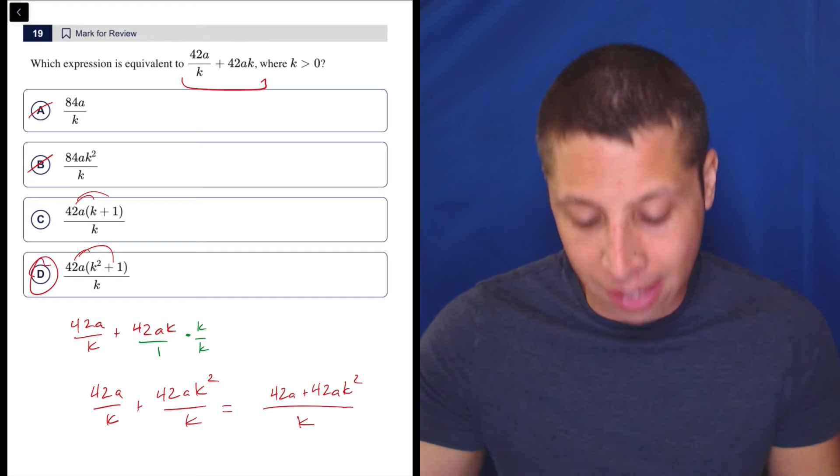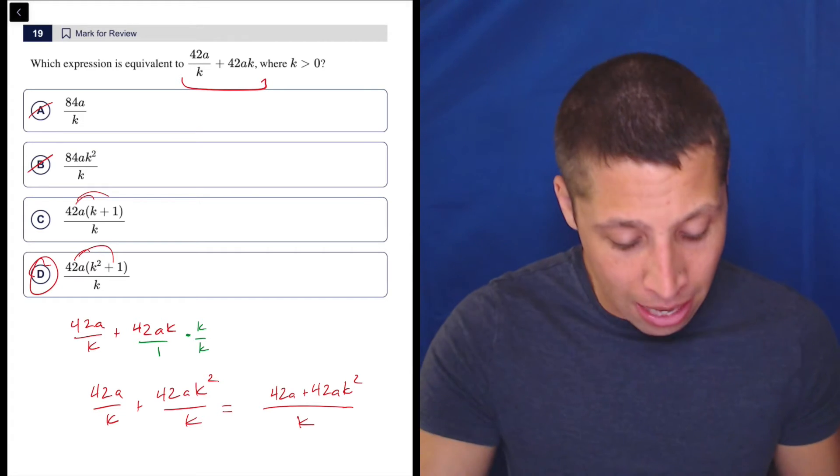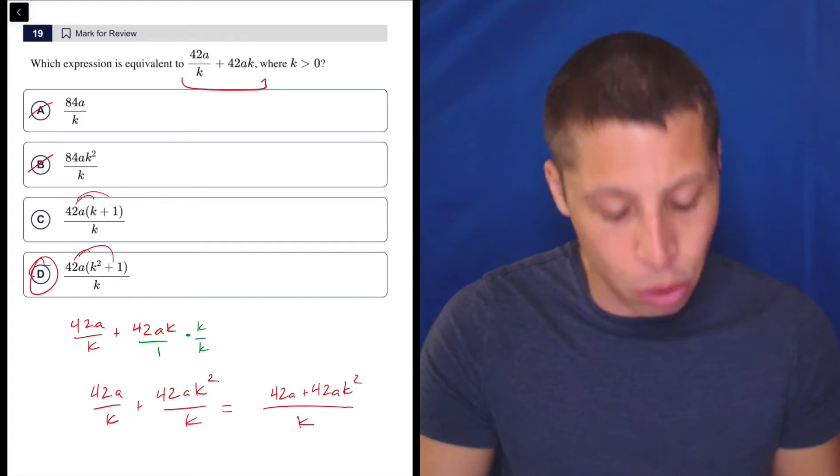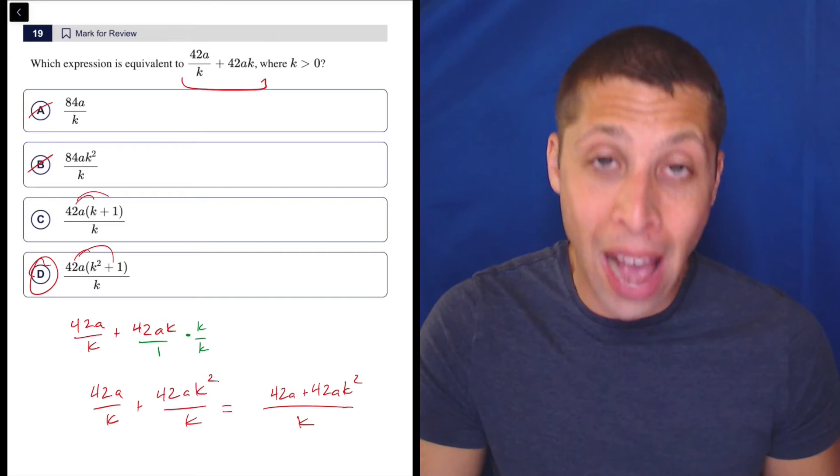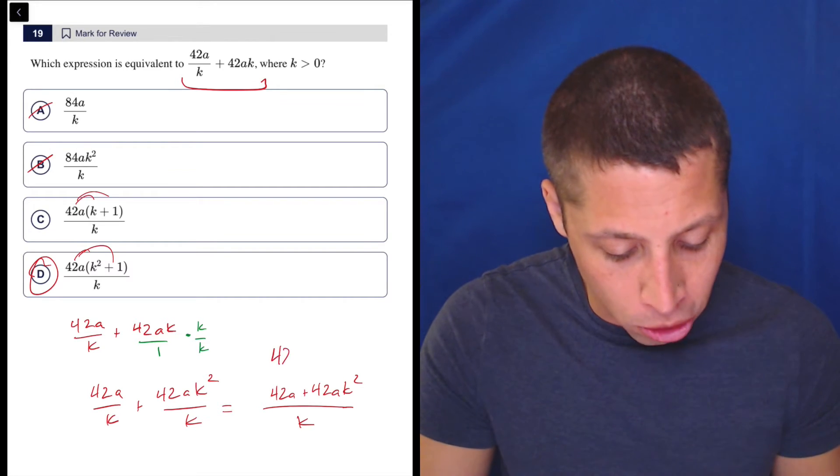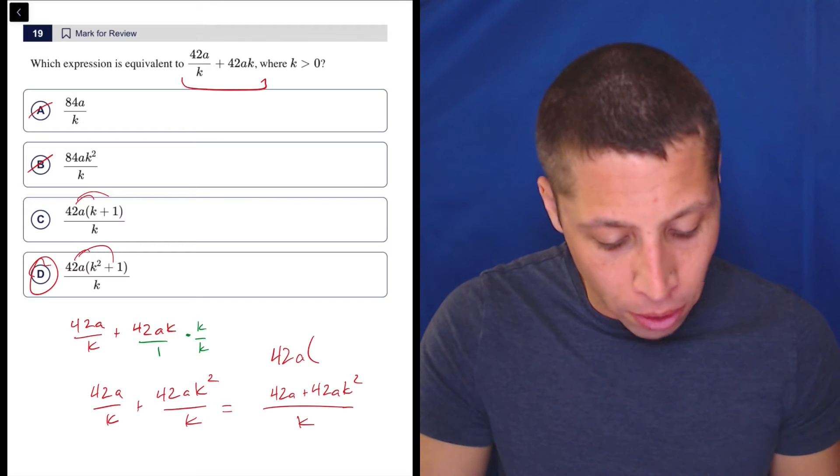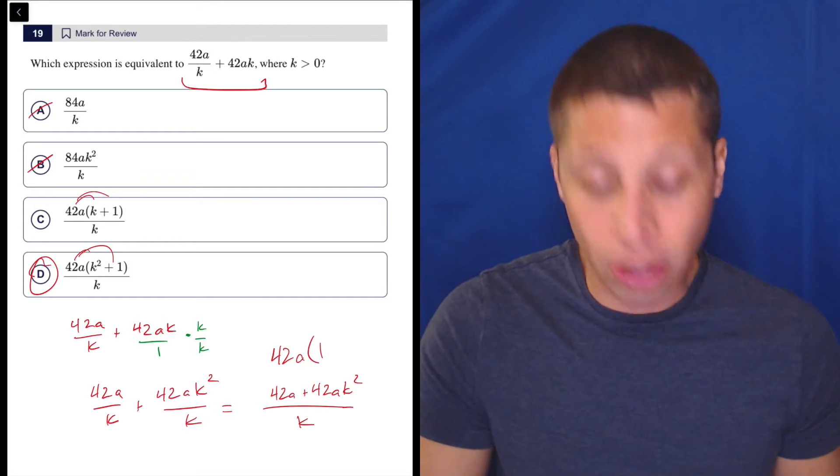It's not going to let us combine with the 42a. But we could always distribute and understand what's going on. And probably at this point, you're like, oh, it's probably d because that's the one with the k squared. Yeah, that's it. Now, the math involved is to find a greatest common factor for the top, which would be 42a. If we pull that out of the first piece, well, that's just a one. So 42a divided by 42a is one.